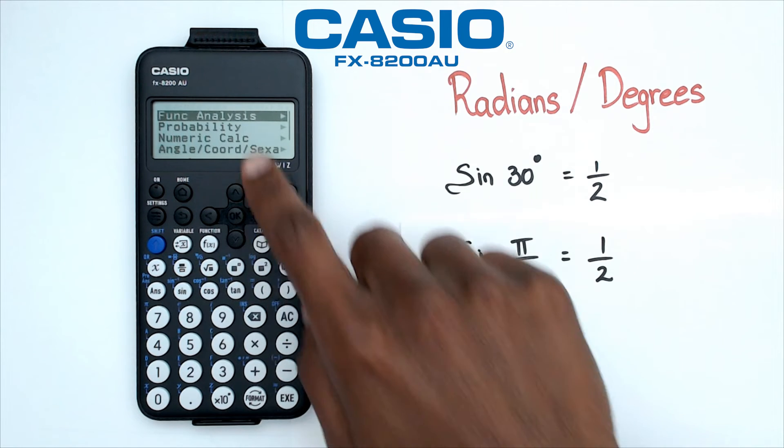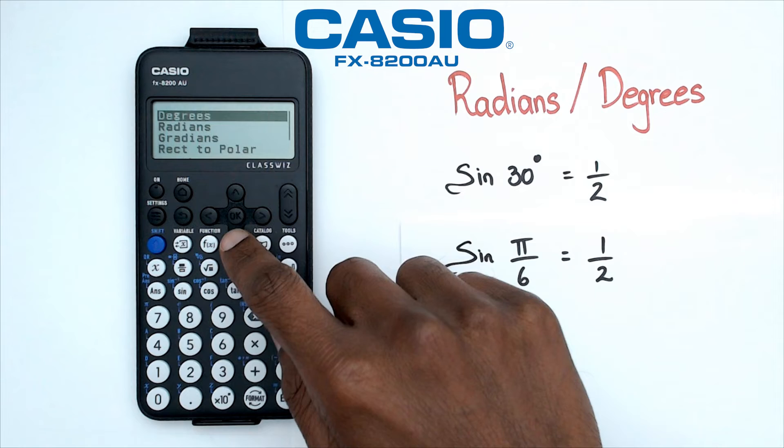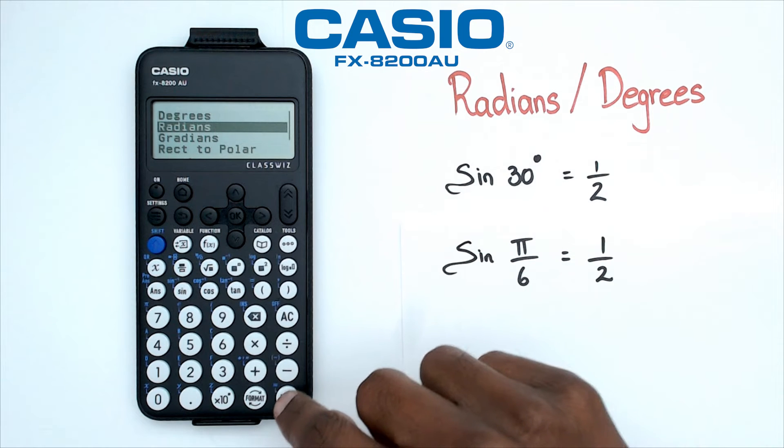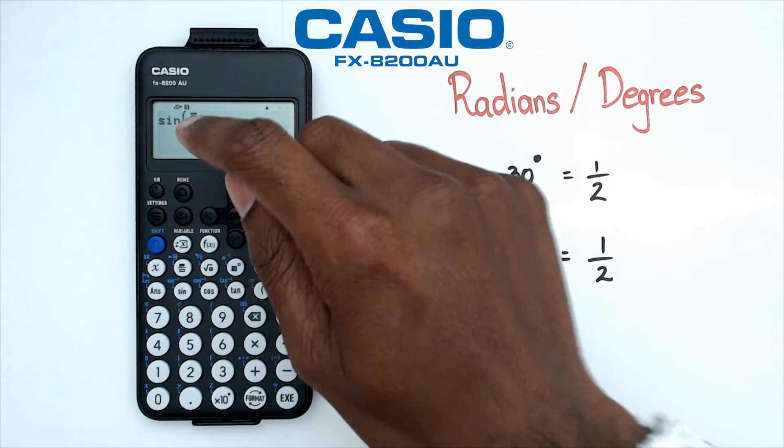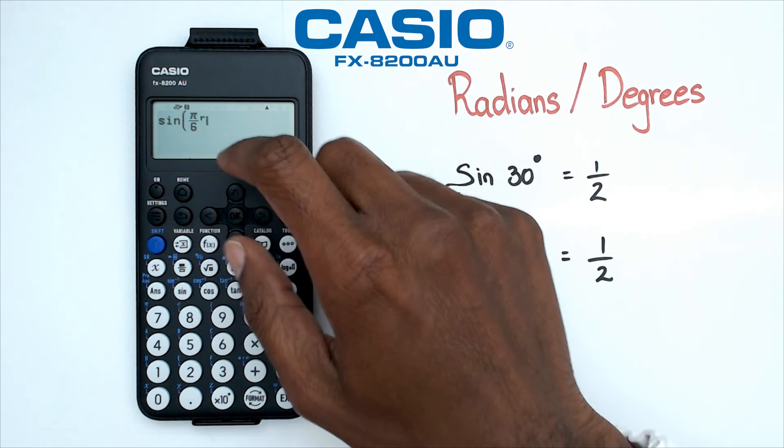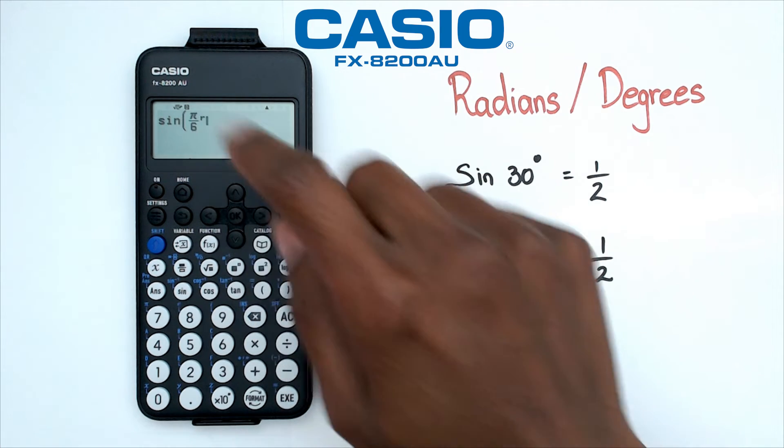You go into catalog and in here you go into angle coordinate mode and there's a little button called radians. When you click on it you're going to see a little R popping up here. Now what it's telling the calculator here is that you've got sine of pi over 6 in radians but the mode is in degrees, so it automatically converts it. So check this out, you're going to get half.